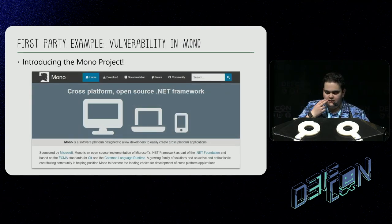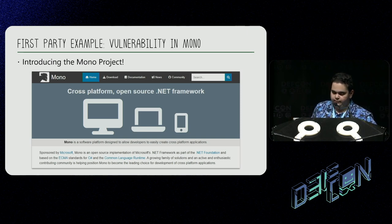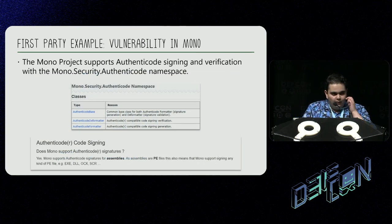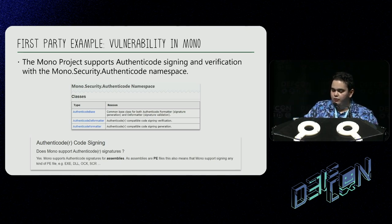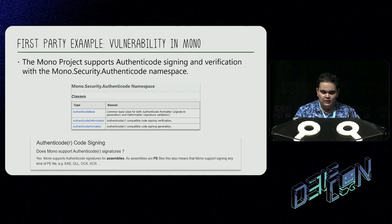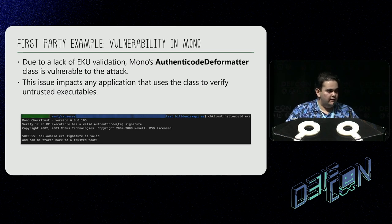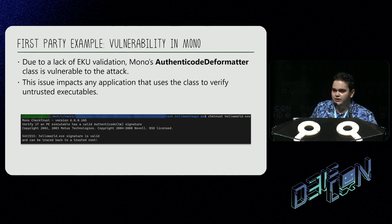Although Windows may have gotten it right, I was curious about other libraries that validated the authenticity of Authenticode applications — what about workloads that needed to verify these signatures on other operating systems? The Mono project is an open source equivalent to Microsoft's .NET framework. Microsoft sponsors the project and Mono is frequently used in cross-platform applications. Mono supports Authenticode signing and verification with its AuthenticodeDeformatter and AuthenticodeFormatter classes. Unfortunately, due to a lack of EKU validation, Mono's AuthenticodeDeformatter class is vulnerable to the attack. This issue isn't specific to Mono's simple CheckTrust testing utility — any Mono application that uses this class for verifying untrusted executables is potentially vulnerable.